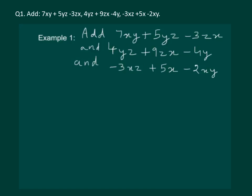Again, the first step would be to identify the like terms. We can see one xy term and another xy term. Then a yz term, another yz term, and more yz terms. Next is a zx term, another zx term, and another zx term. So we have identified the like terms, and we also have some extra terms: minus 4y and plus 5x.